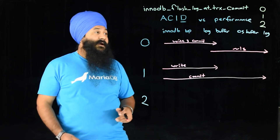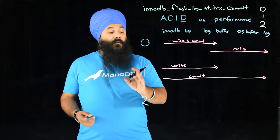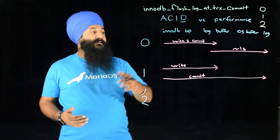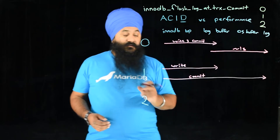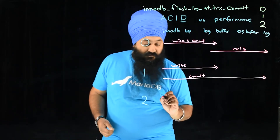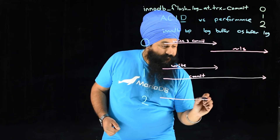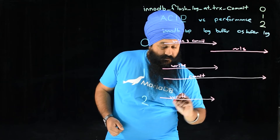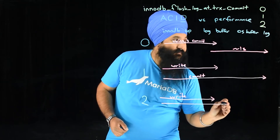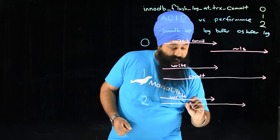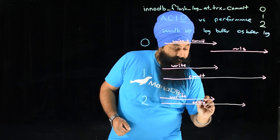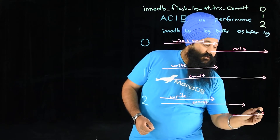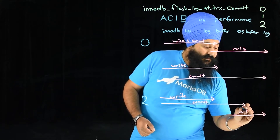If we set it to two, this is sort of a trade-off. Setting it to one has quite a bit of a performance hit compared to zero — zero means it just writes in memory. What two will do is write to the log buffer, but that write is committed all the way to the OS buffer, and then the OS will flush to disk approximately every one second.